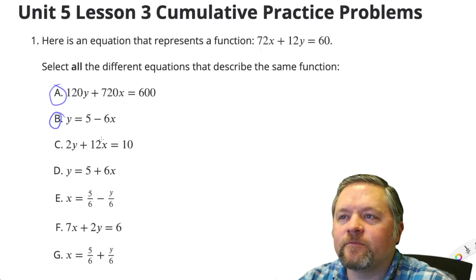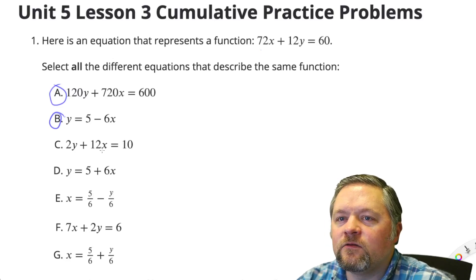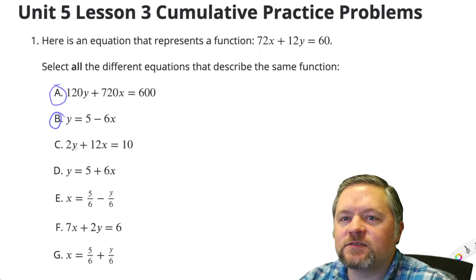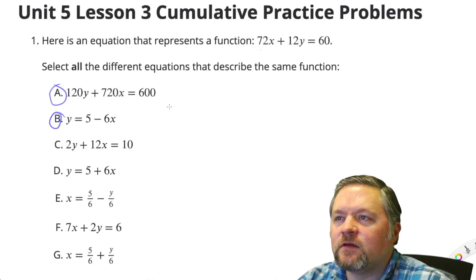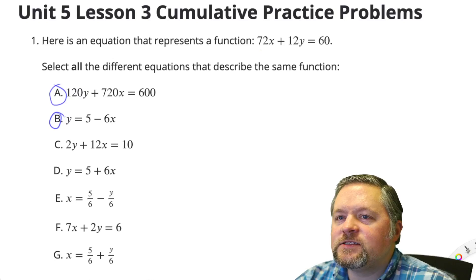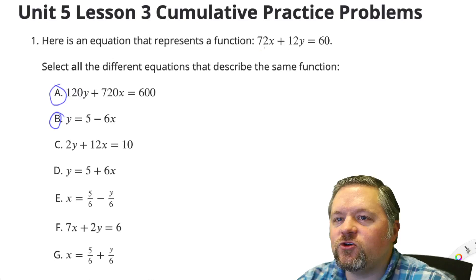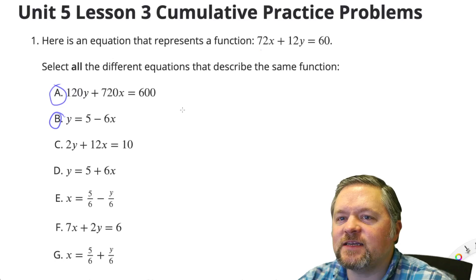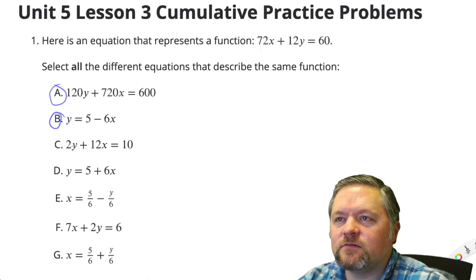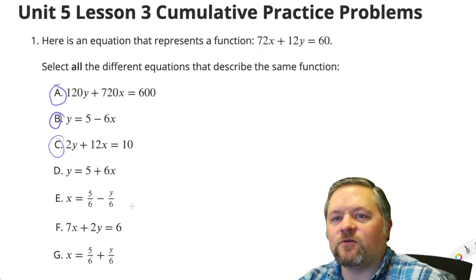C, we've gone to 12x. 60 divided by 6 is 10. 12y divided by 6 is 2y. 72x divided by 6 is 12x. That's going to work.